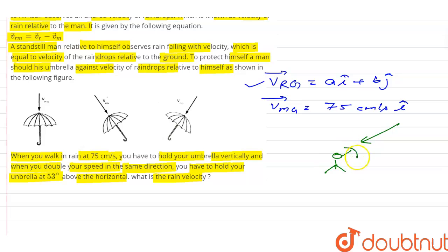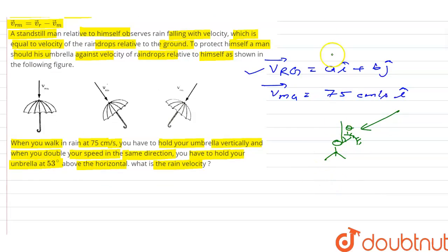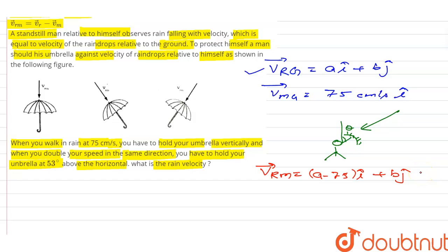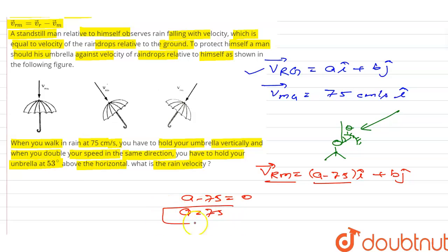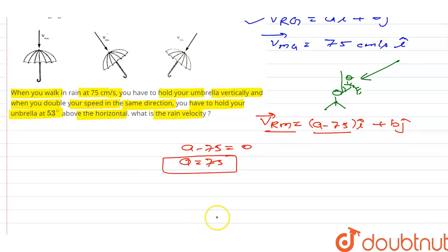He should hold the umbrella in a certain direction, so we calculate the angle theta. The velocity of rain with respect to man equals (a − 75)·i-cap plus b·j-cap. Since the rain is falling vertically downward, the x-component (a − 75) equals zero, therefore a = 75.